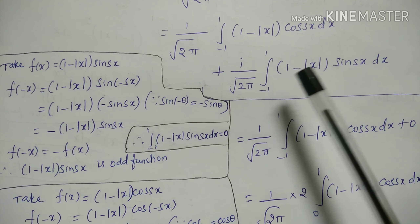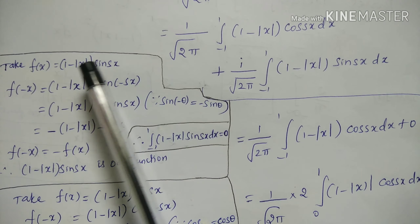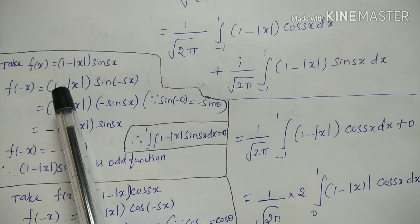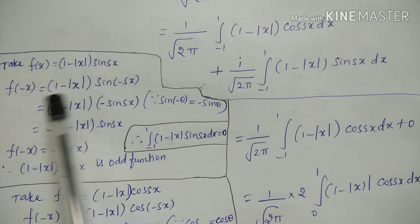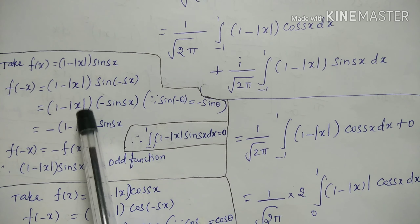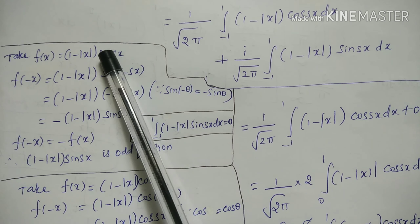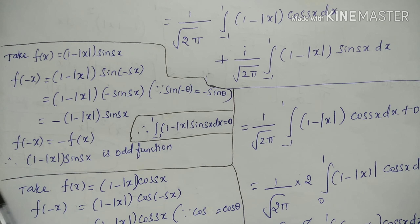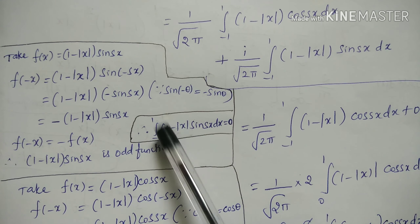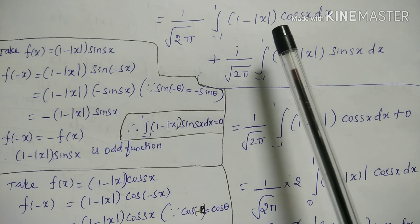We check whether (1 − |x|)·sin(sx) is odd or even. Taking f(x) = (1 − |x|)·sin(sx), then f(−x) = (1 − |−x|)·sin(−sx) = −(1 − |x|)·sin(sx) = −f(x). Therefore (1 − |x|)·sin(sx) is an odd function, and the integral from −1 to 1 of (1 − |x|)·sin(sx) dx equals 0.